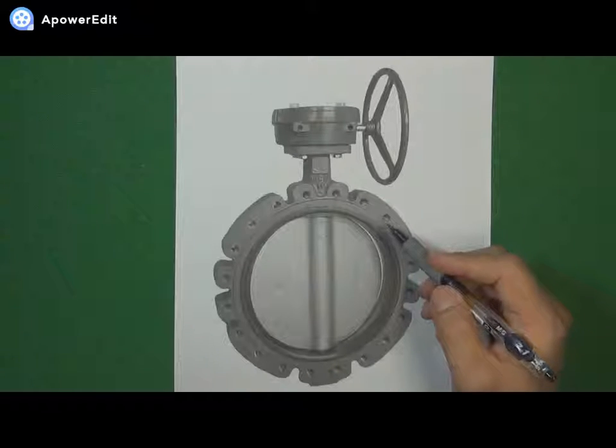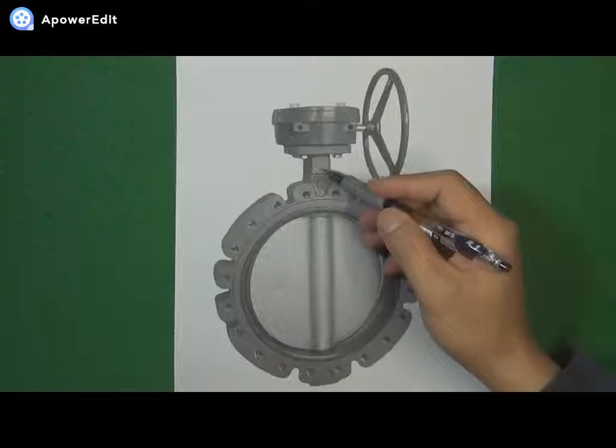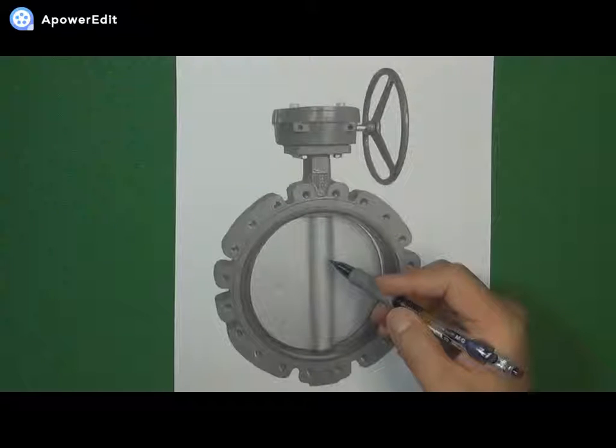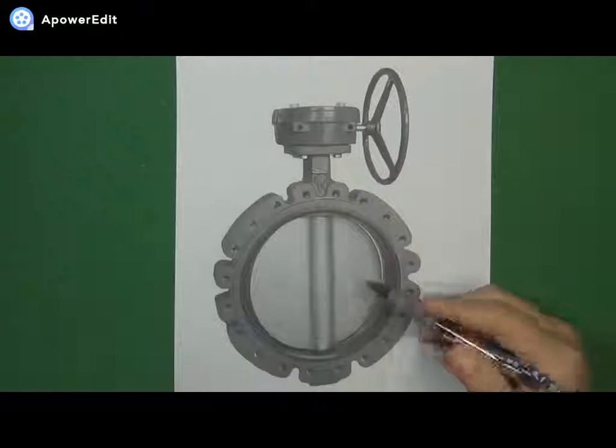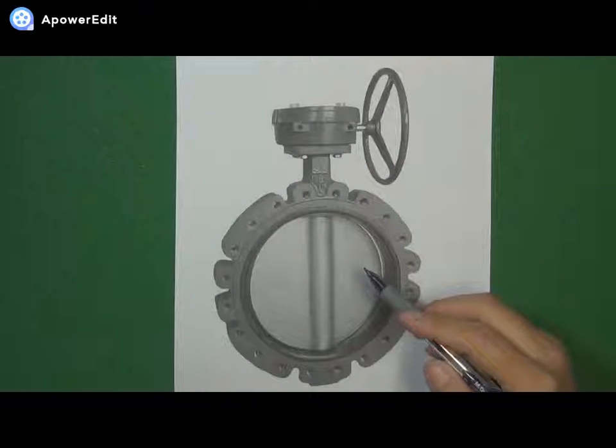And then we're going to operate the valve by the valve stem to turn the valve disc 90 degrees to open and close the valve. So that is the basic function for butterfly valve.